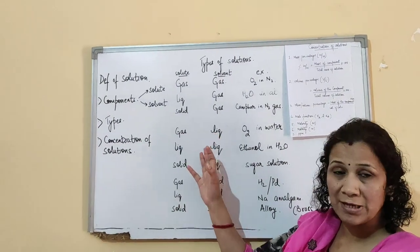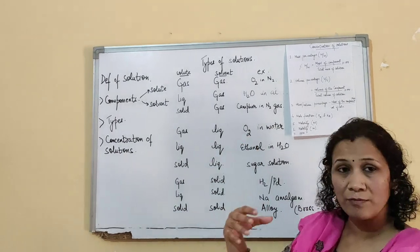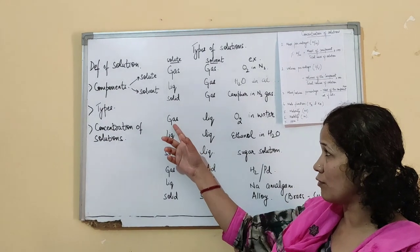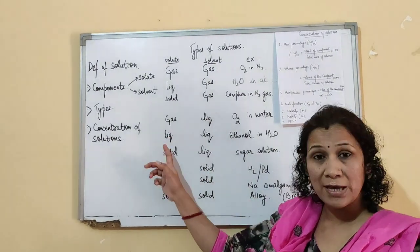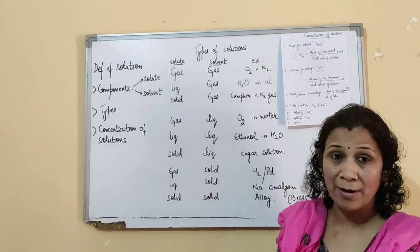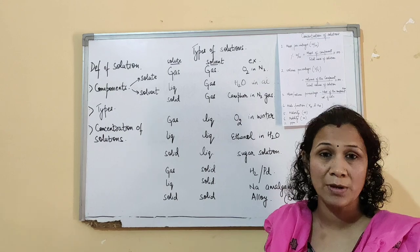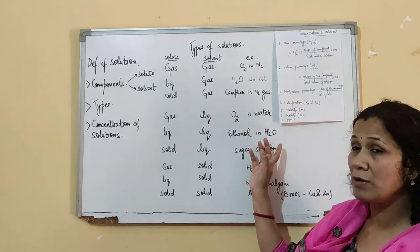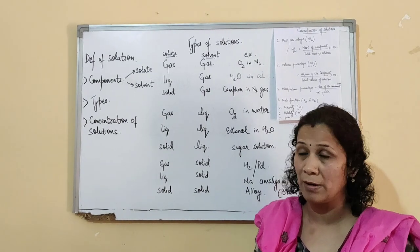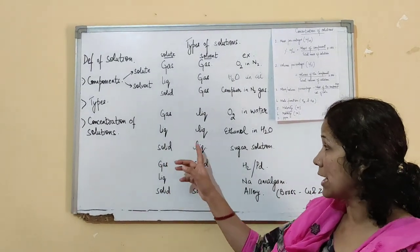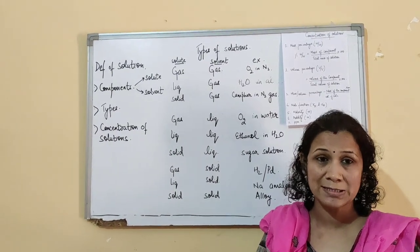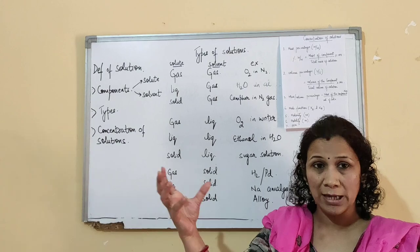Coming to the second type — gas in liquid. We can talk of oxygen gas dissolved in water as an example. For liquid in liquid, you can have two liquids mix, but we take liquids which can evenly mix — like ethanol in water. It cannot be kerosene, because they are immiscible and will not mix uniformly. For solid in liquid, we can take sugar or salt and dissolve it in water.